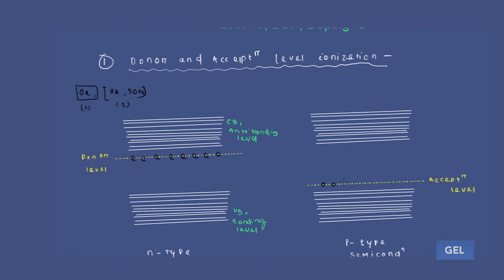There will be availability of holes on the acceptor level. If you increase the temperature from 0K to 300K, the holes start shifting from the acceptor level to the valence band. Along with that, the acceptor level also starts shifting from its initial position toward the valence band.